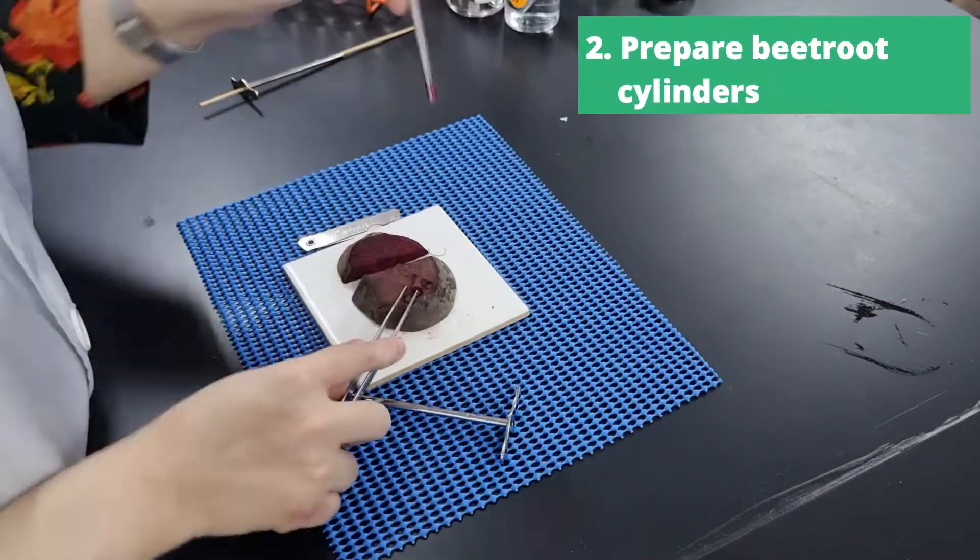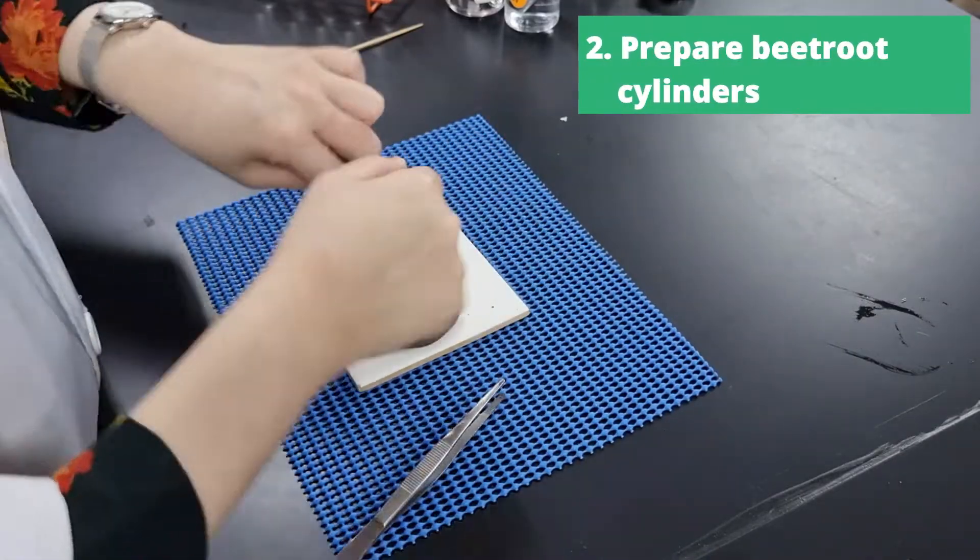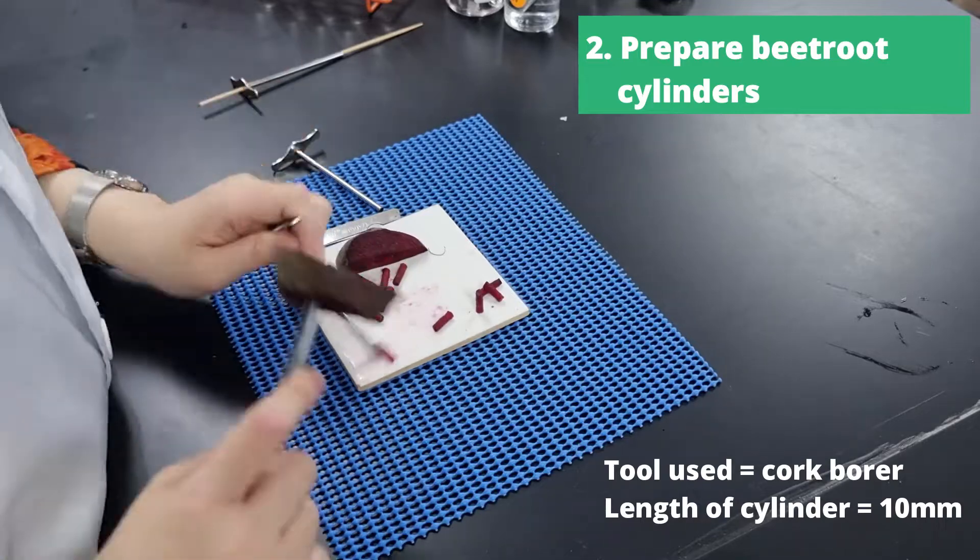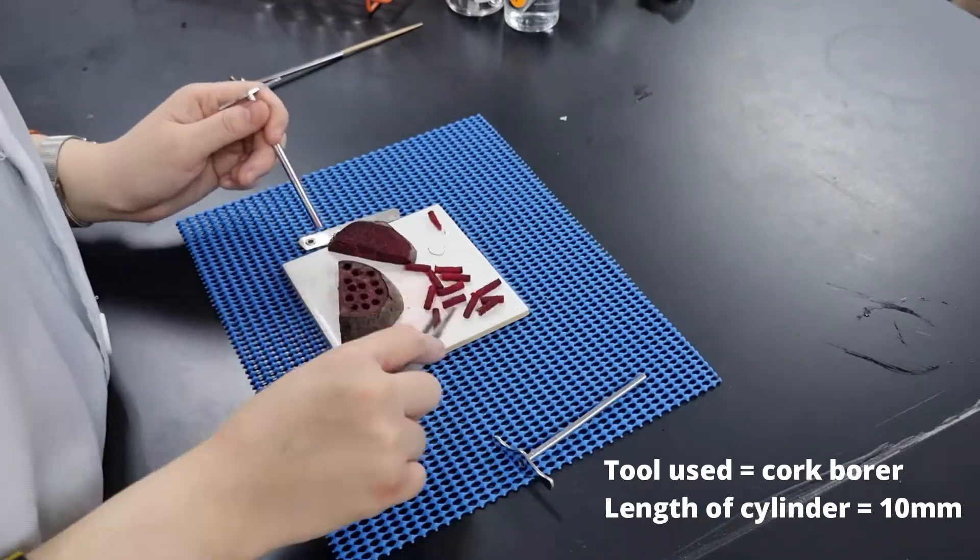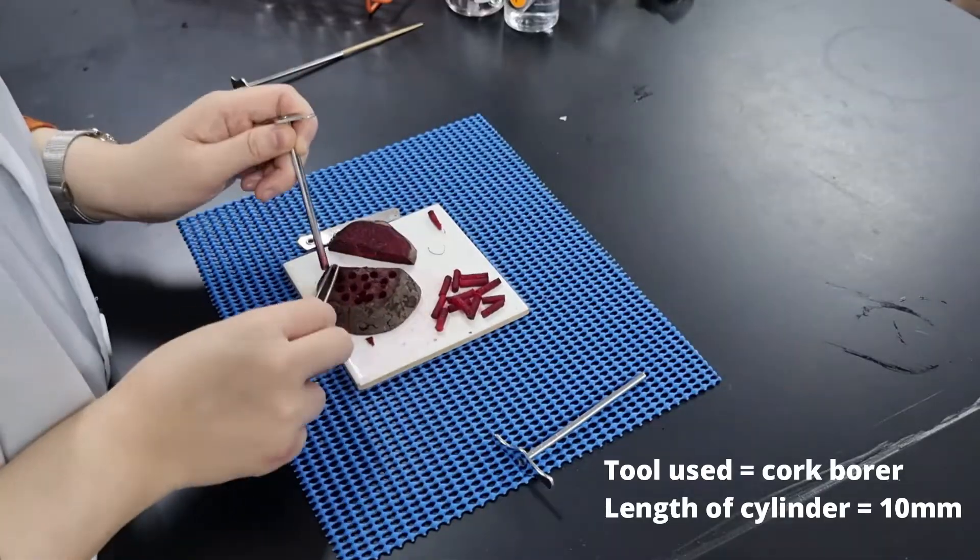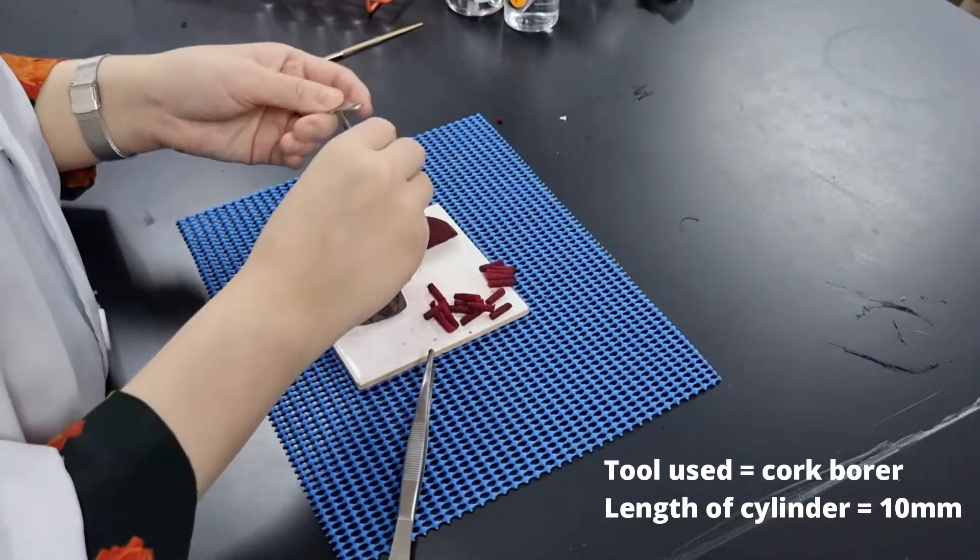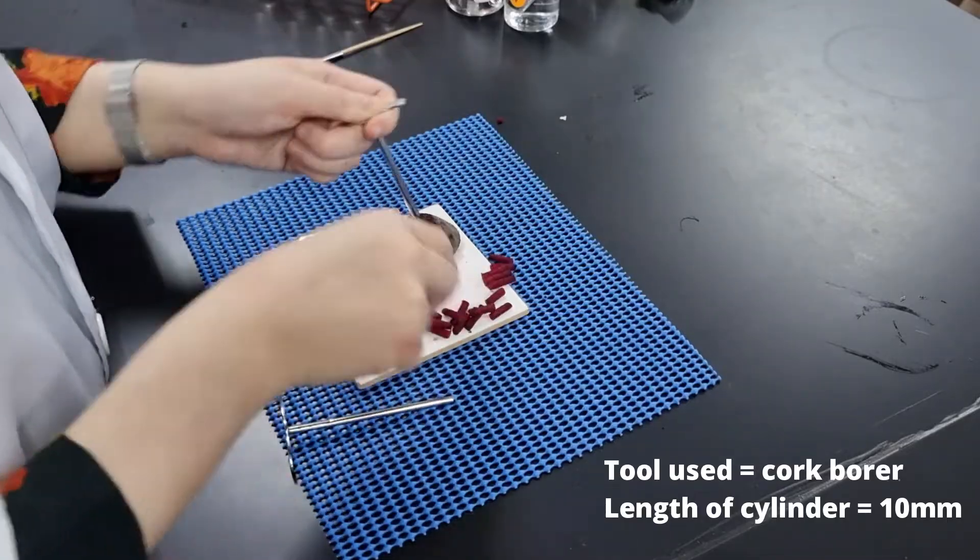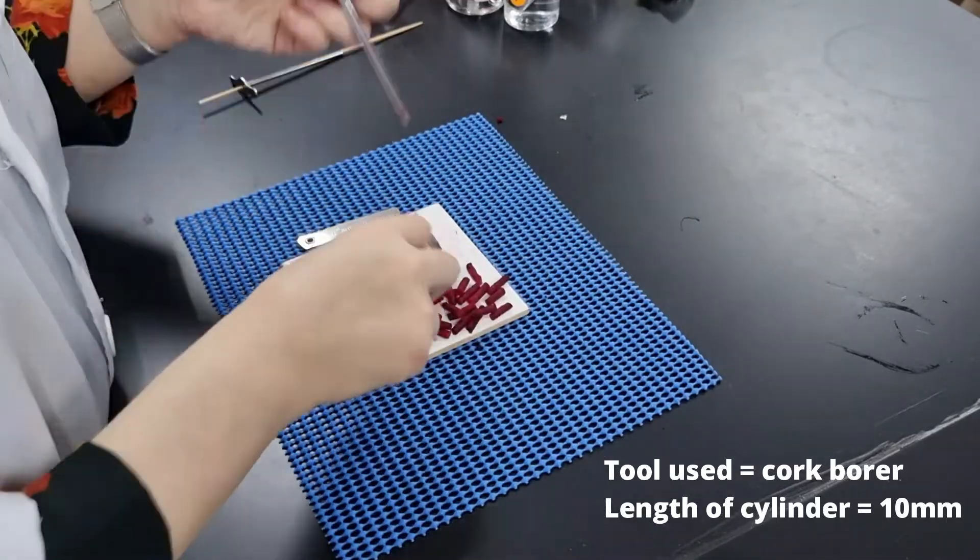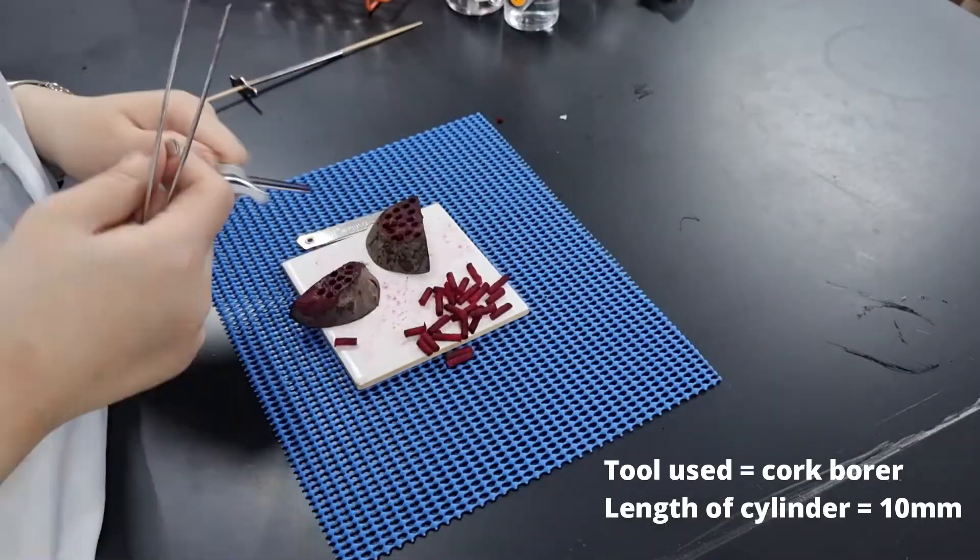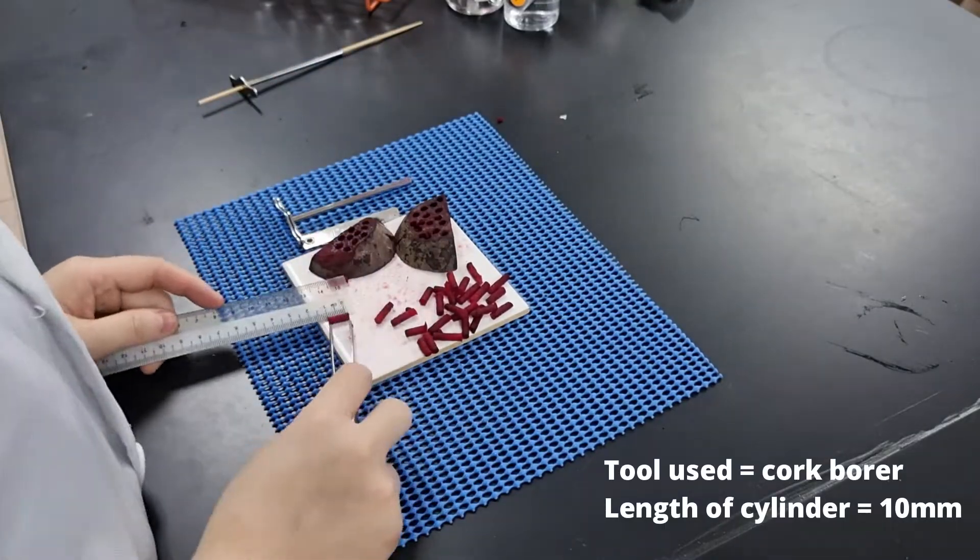Next up, we will be preparing the beetroot cylinder. So we use this tool called cork borer and it will make cylinders for us as we stab it through the beetroot. And then we're going to cut this beetroot into 10 mm long cylinder. So the diameter is already constant because of the cork borer. We just standardize the length to be 10 mm long.